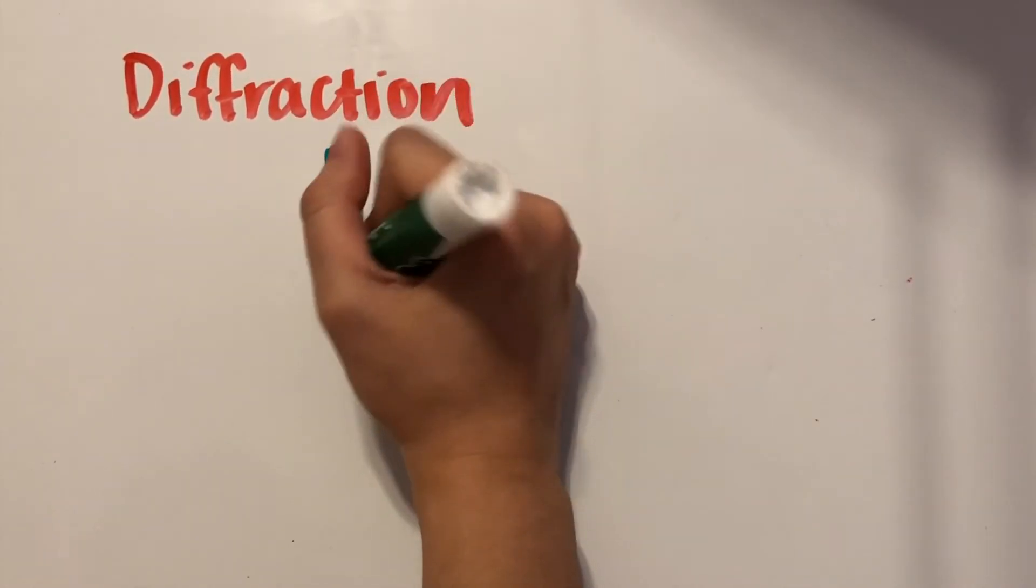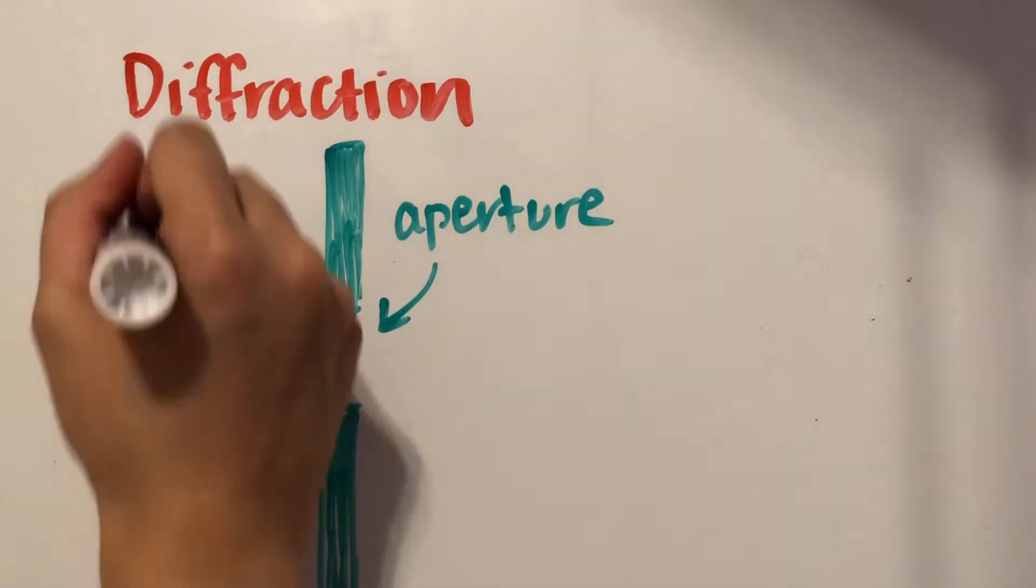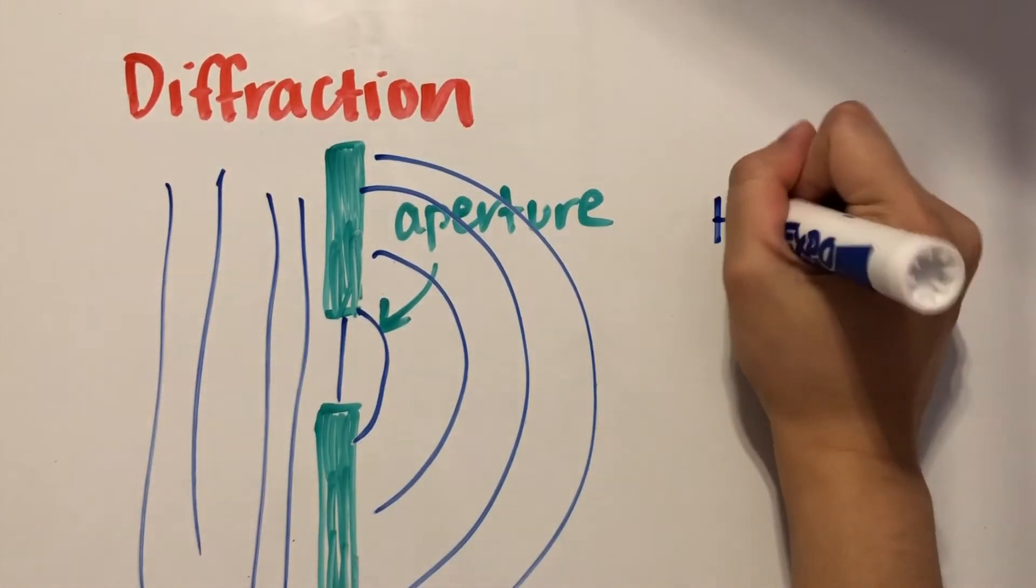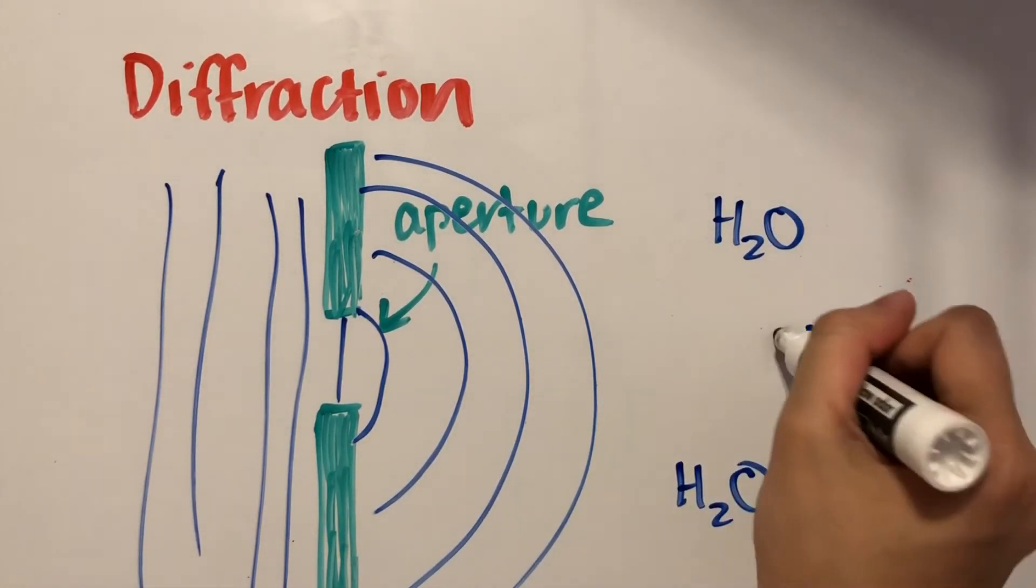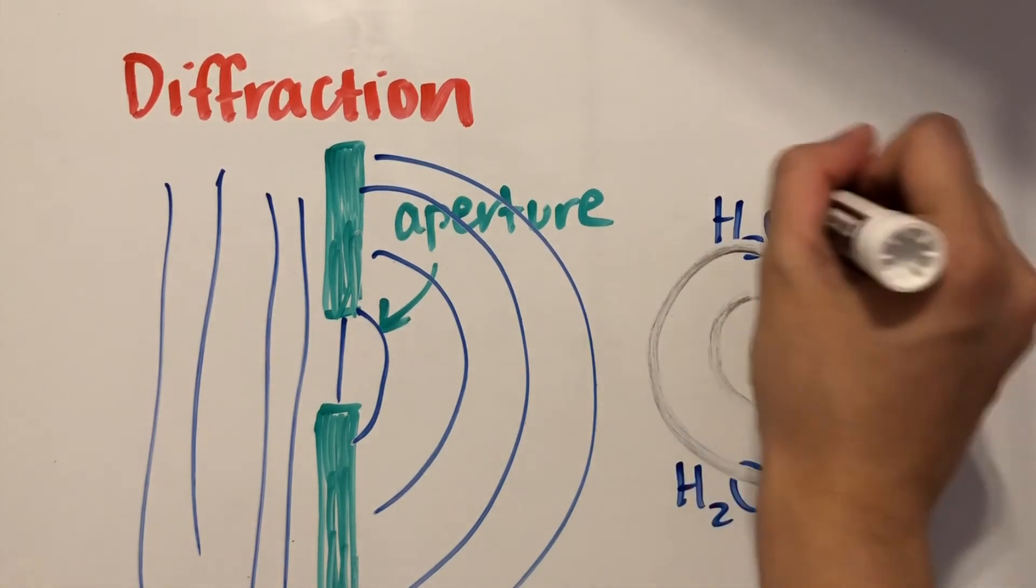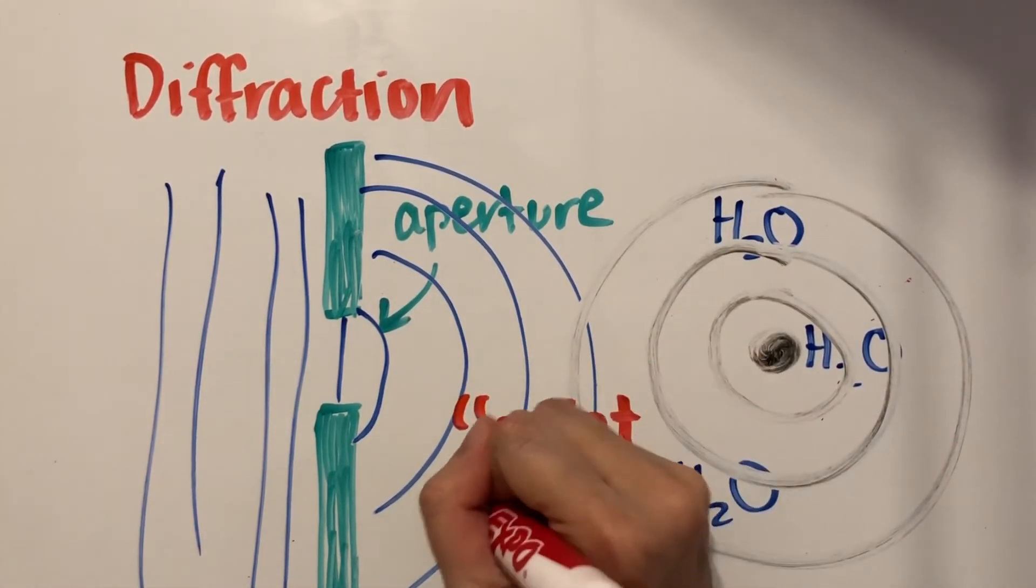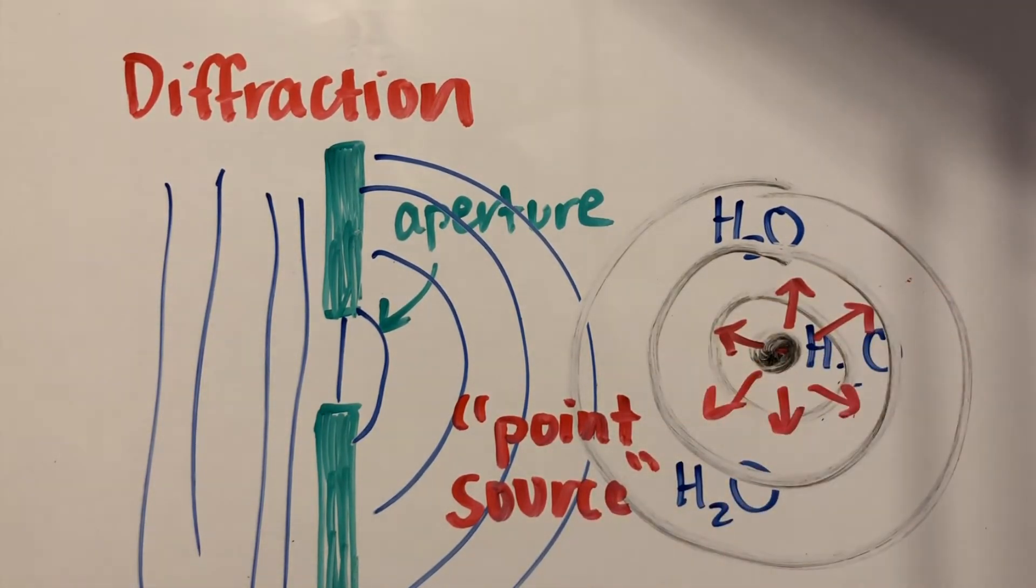Diffraction basically describes the spreading out of waves after passing through an opening in a barrier. The opening in the barrier is called the aperture. The aperture acts kind of like a pebble being thrown into water. The resulting waves are circular. So when concentric waves like these result from a disturbance, we call that disturbance a point source. It's like a point is hitting the top of the medium and the wave travels from that point in all directions.